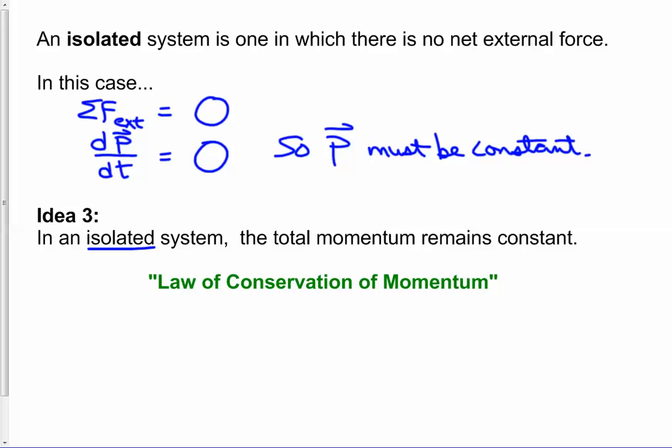The momentum can be shifted around, so one object may have a decrease in momentum and another object may have a corresponding increase in momentum, but the total has to stay constant. And that helps us figure out some answers for some problems.